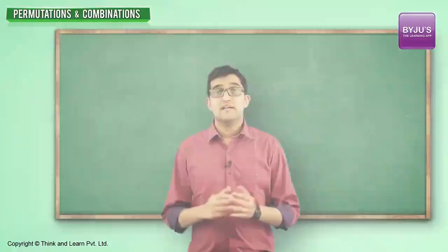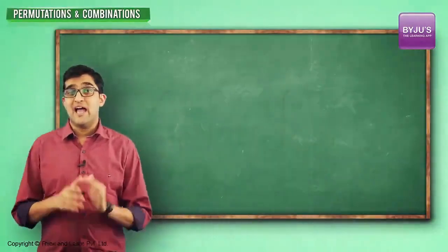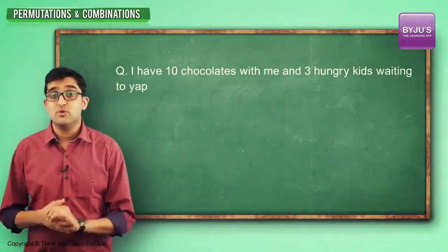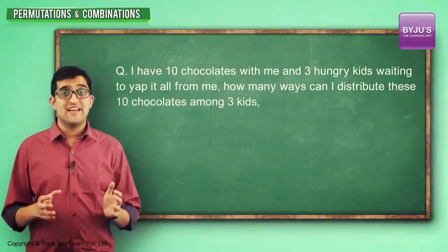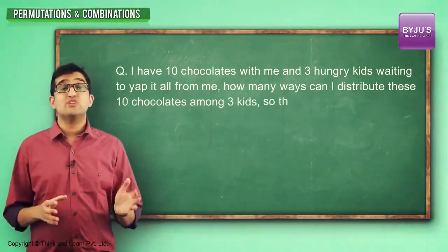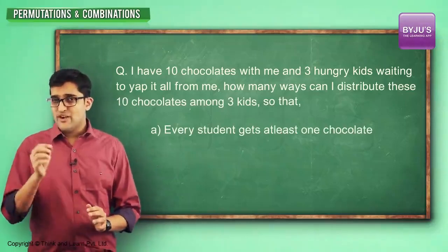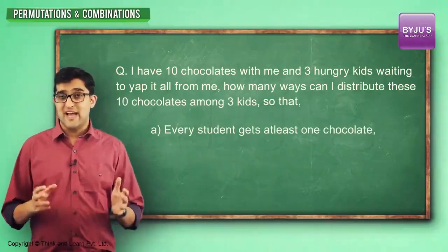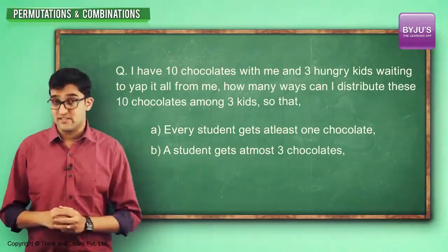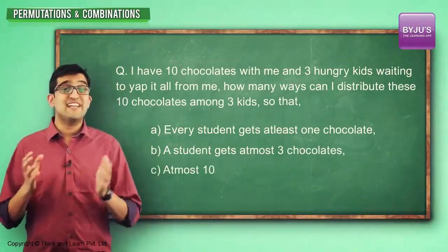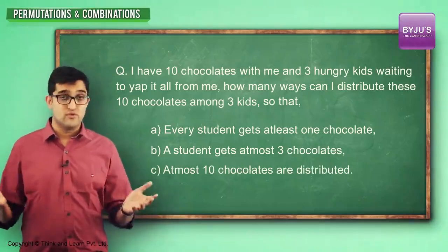These question types don't end here. I can ask the same question with added constraints — for instance, divide so that every student gets at least one chocolate, so that a student gets at most 3 chocolates, or so that at most 10 chocolates are distributed, and so on and so forth.